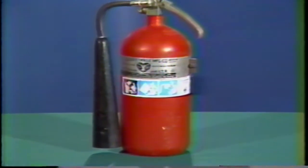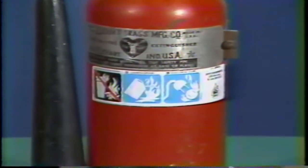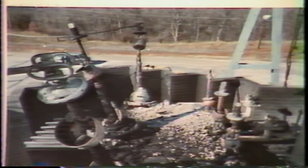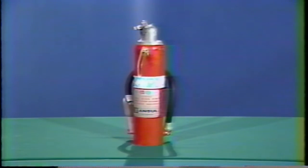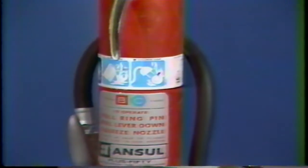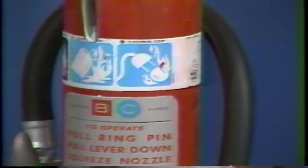The B extinguisher may also be identified by a symbol showing a gasoline can and flames. Class C fires occur in electrical equipment; non-conducting agents must be used. Dry chemical and carbon dioxide are suitable agents for this type of fire. Extinguishers suitable for class C fires should be identified by a circle containing the letter C. If colored, the circle shall be colored blue. The C extinguisher may also be identified by the symbol showing the plug-in of an electrical cord and the flames of a fire.